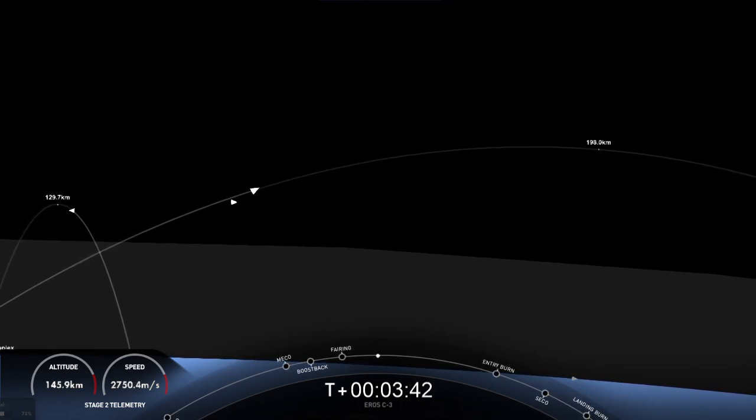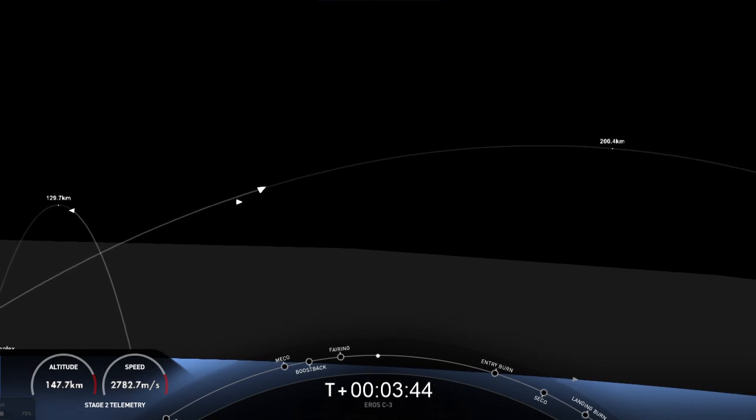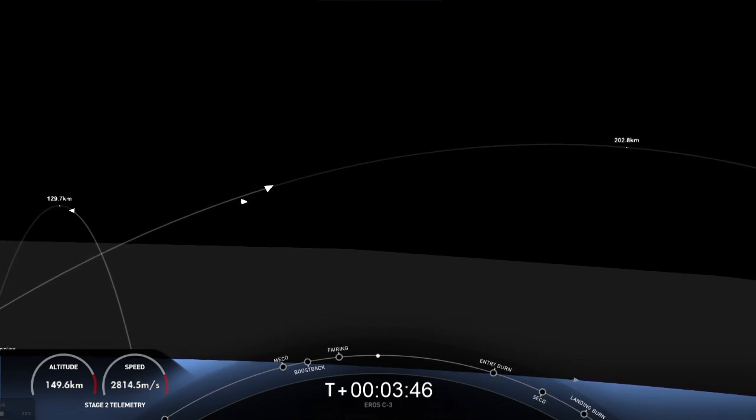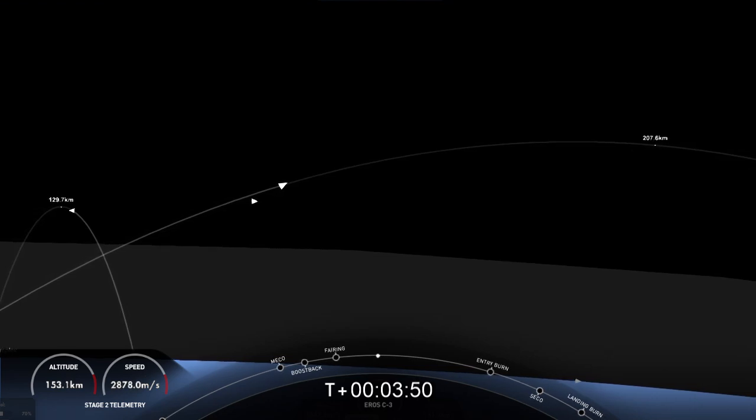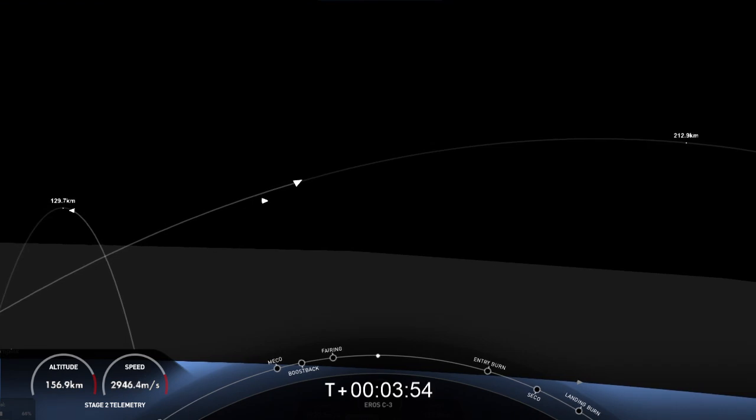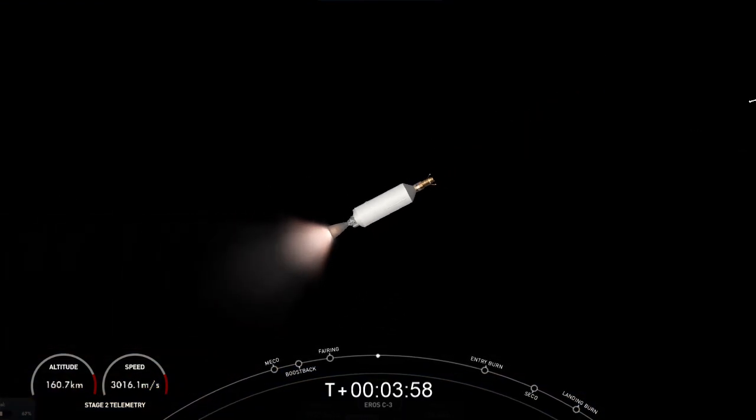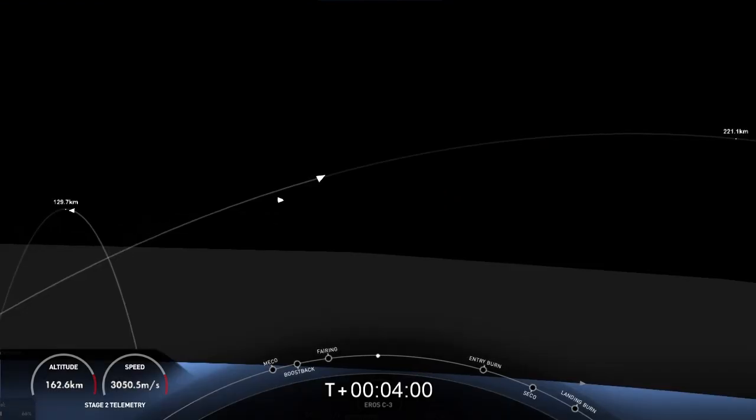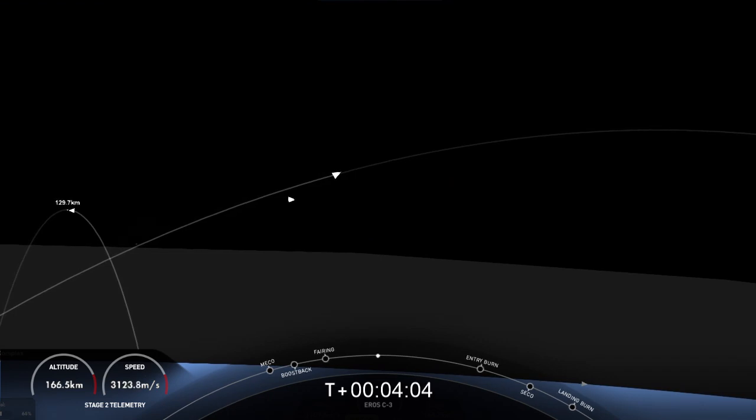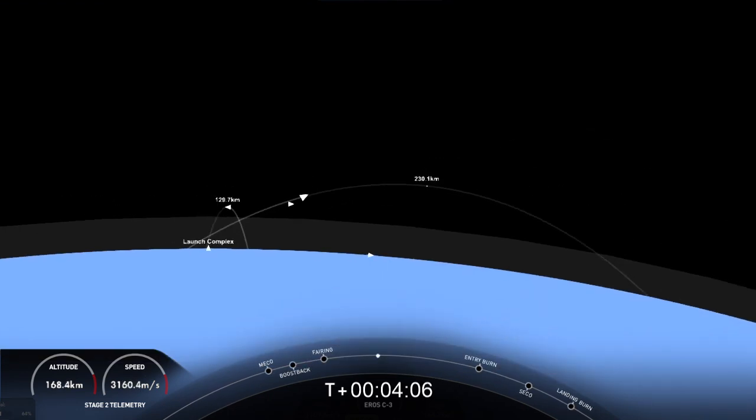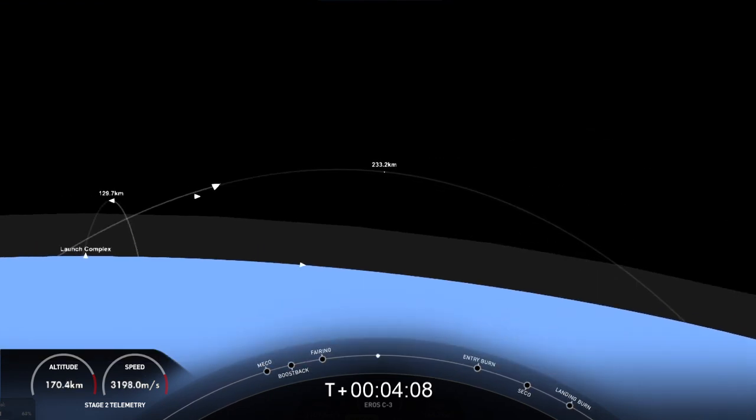Now, that entry burn, vehicles on nominal trajectory. That entry burn that I mentioned is just about a couple minutes away from now for the first stage. Again, we are scheduled to land on land today, so the first stage is doing three burns. That is the boost back burn, entry burn, and then there is a landing burn for that vehicle.